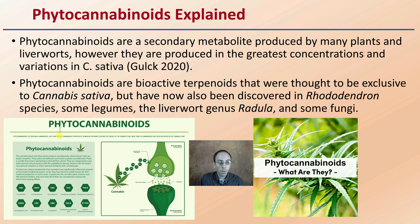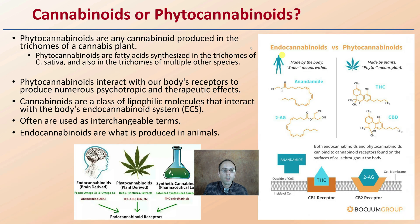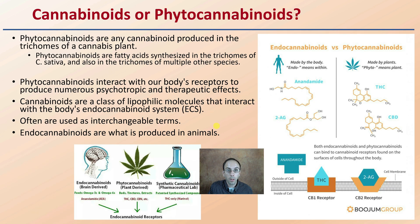Some of those phytocannabinoids you might be familiar with are CBD and THC — probably the two most famous ones — but there's also CBC, THCA, CBG, as well as others. They're involved in the neurological pathways and receptors of the human body, so we get into cannabinoids or phytocannabinoids.